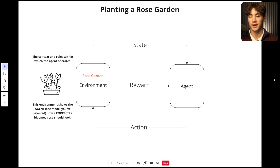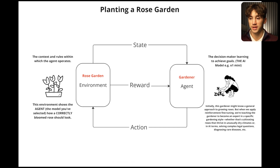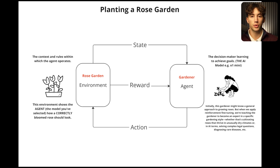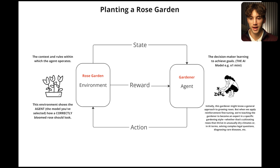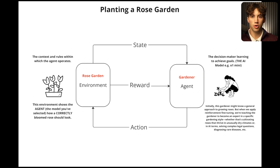The environment is the context and rules within which the agent operates. The agent in this scenario is the gardener — the decision maker that is learning to achieve goals — in other words, your model, for example O1 Mini. Initially the gardener might know a general approach to growing roses, just as the model knows a general approach to finding patterns and answering complex questions. But when you apply reinforcement fine-tuning, you're teaching the gardener to become an expert in a very specific gardening style — maybe cultivating roses in an unusually dry climate, or in AI terms, solving complex legal questions or diagnosing rare diseases — domain-specific tasks.